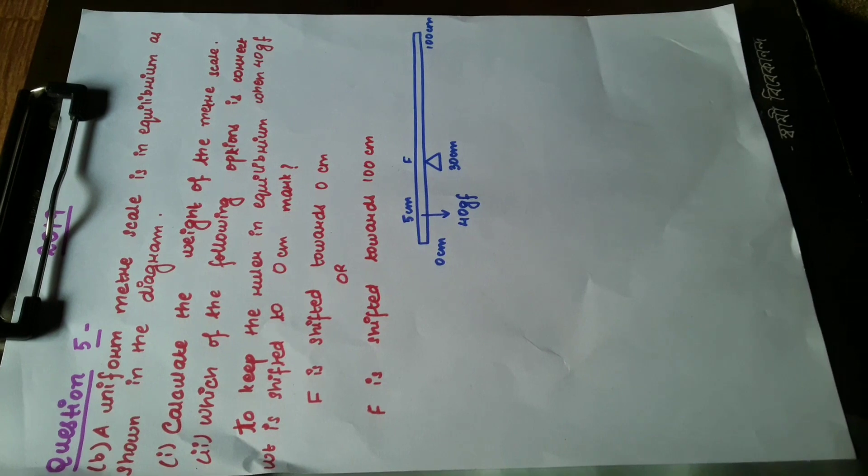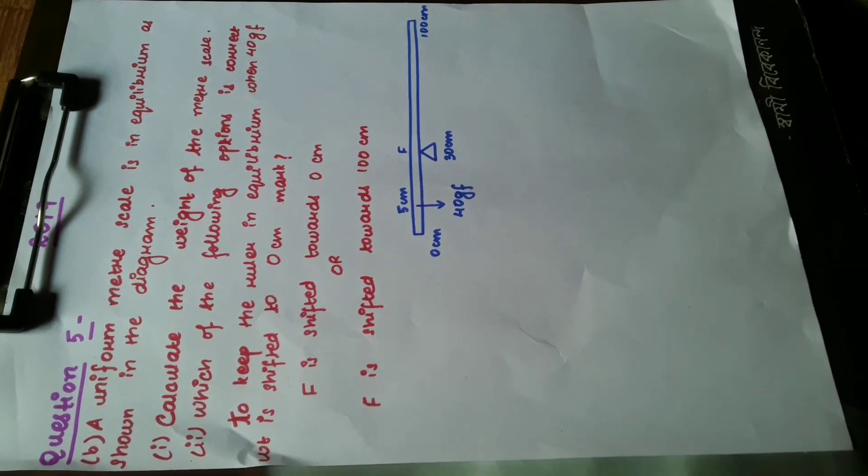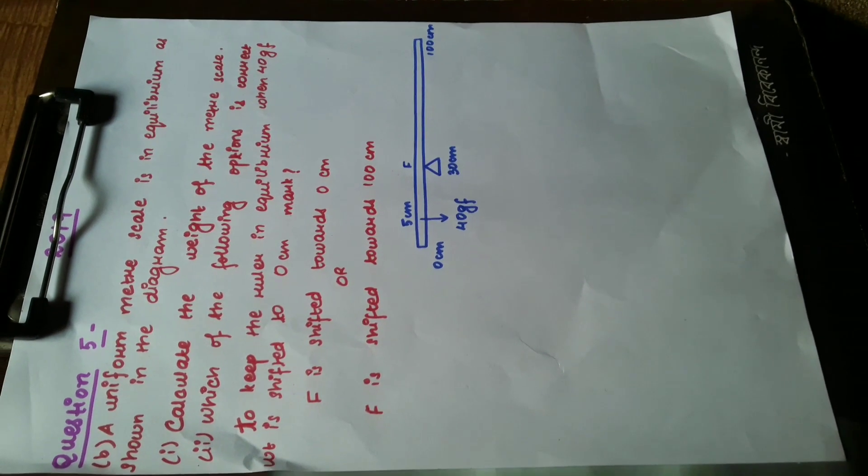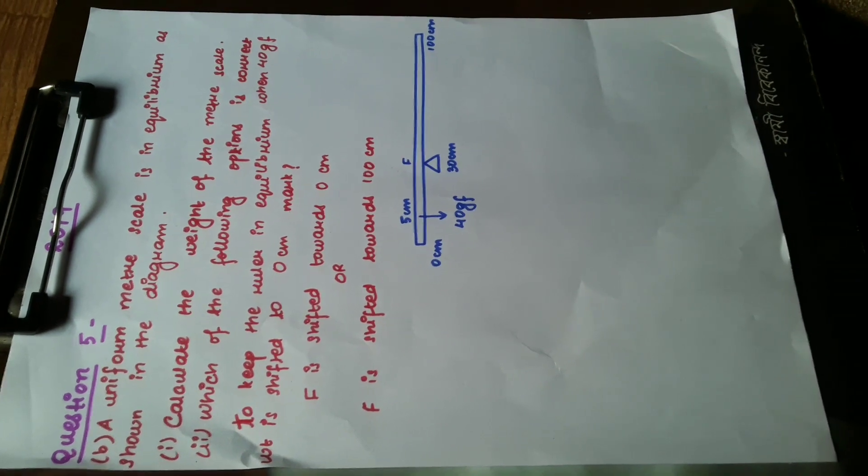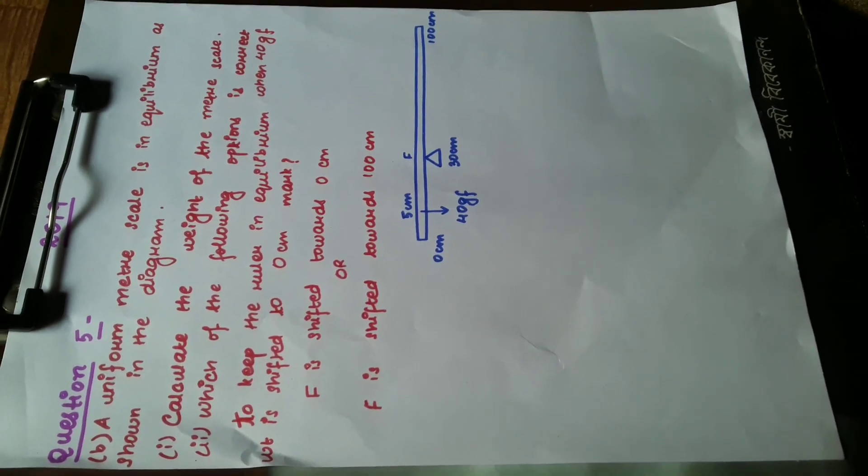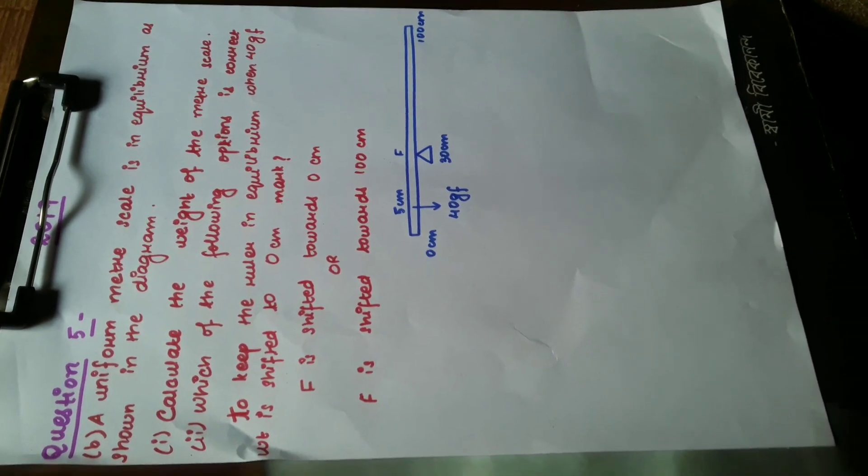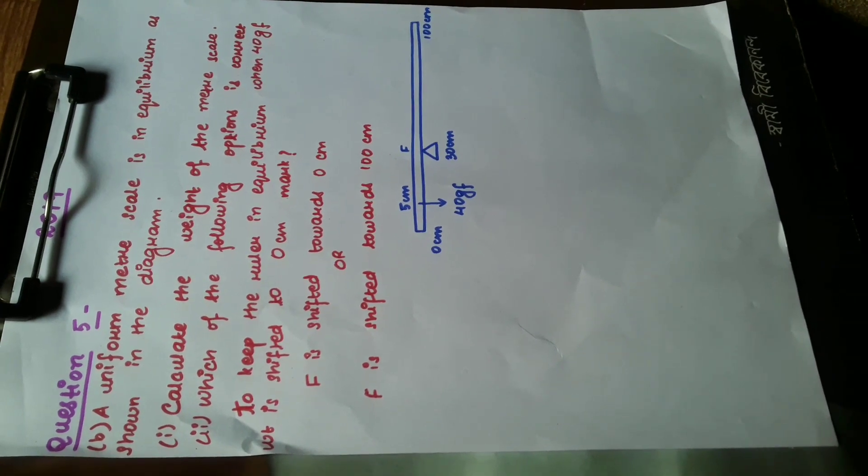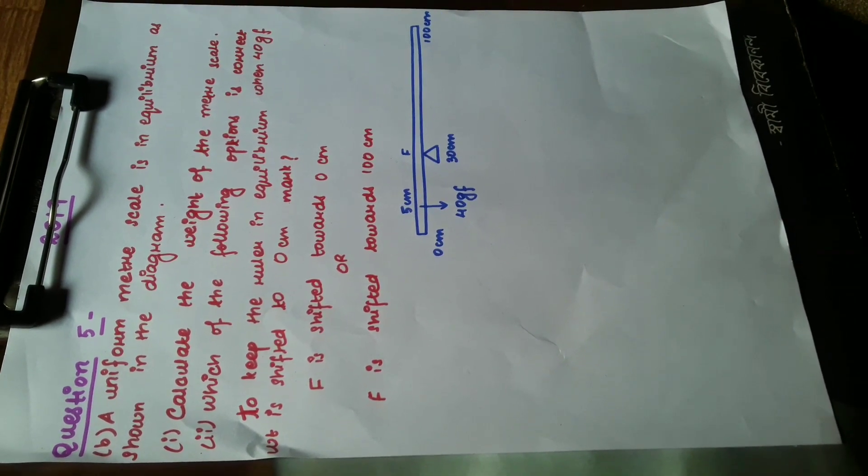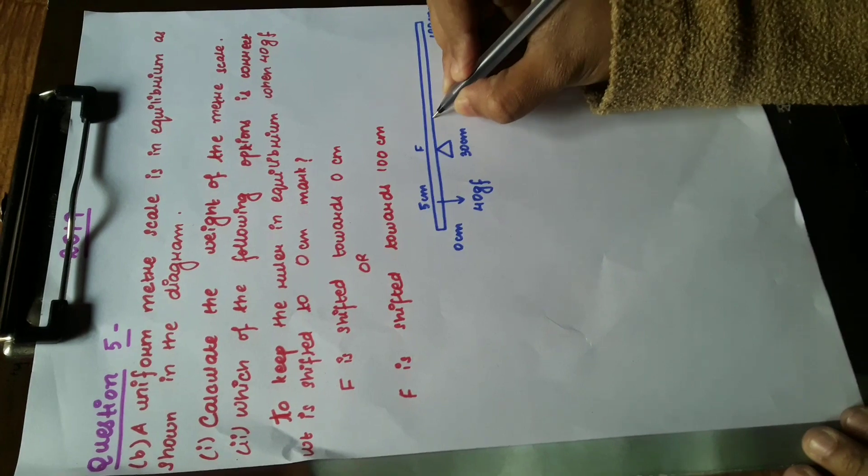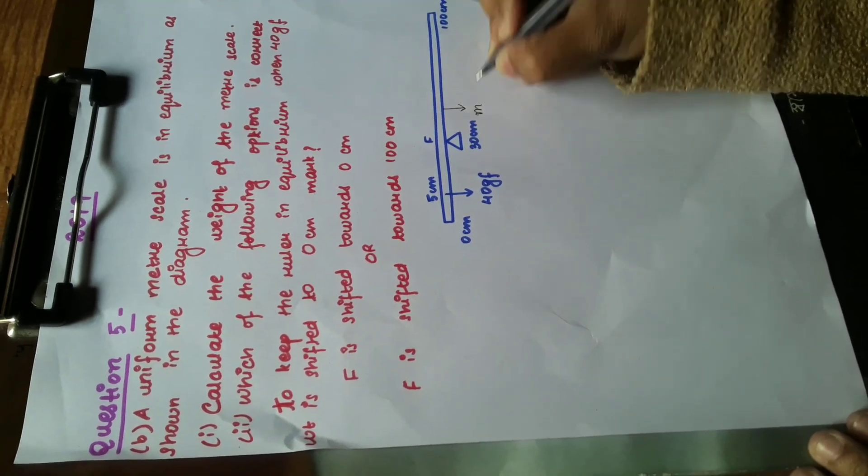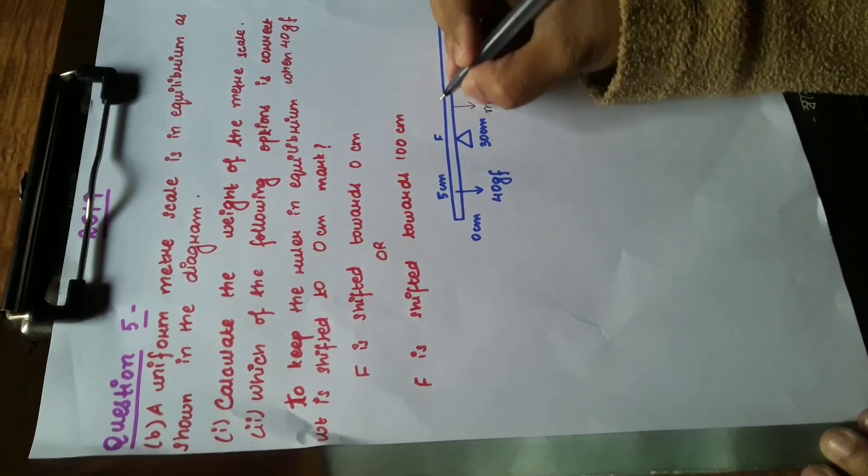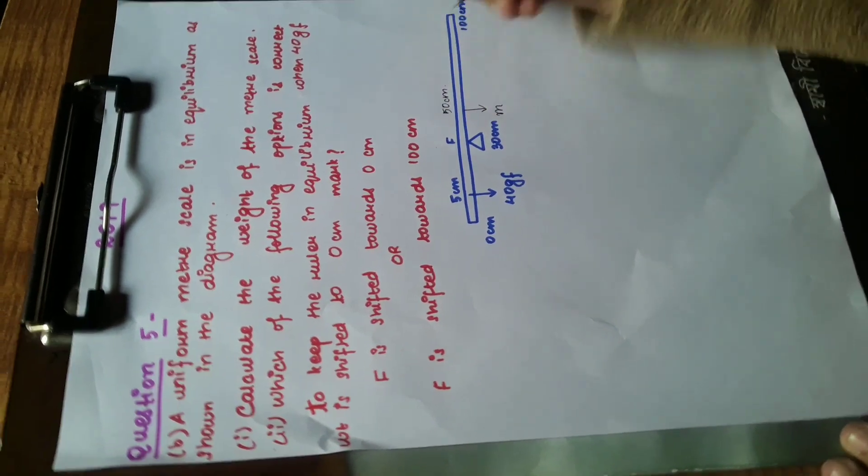First let's solve the first question, then we'll move on to the next part. We've been asked to calculate the weight of the meter scale. As we know, the weight of anything is always directed at the center of mass. The center of mass for this system is at the 50 centimeter mark. So let's consider that the mass of the meter scale is directed at its center of mass, which is at the 50 centimeter mark.